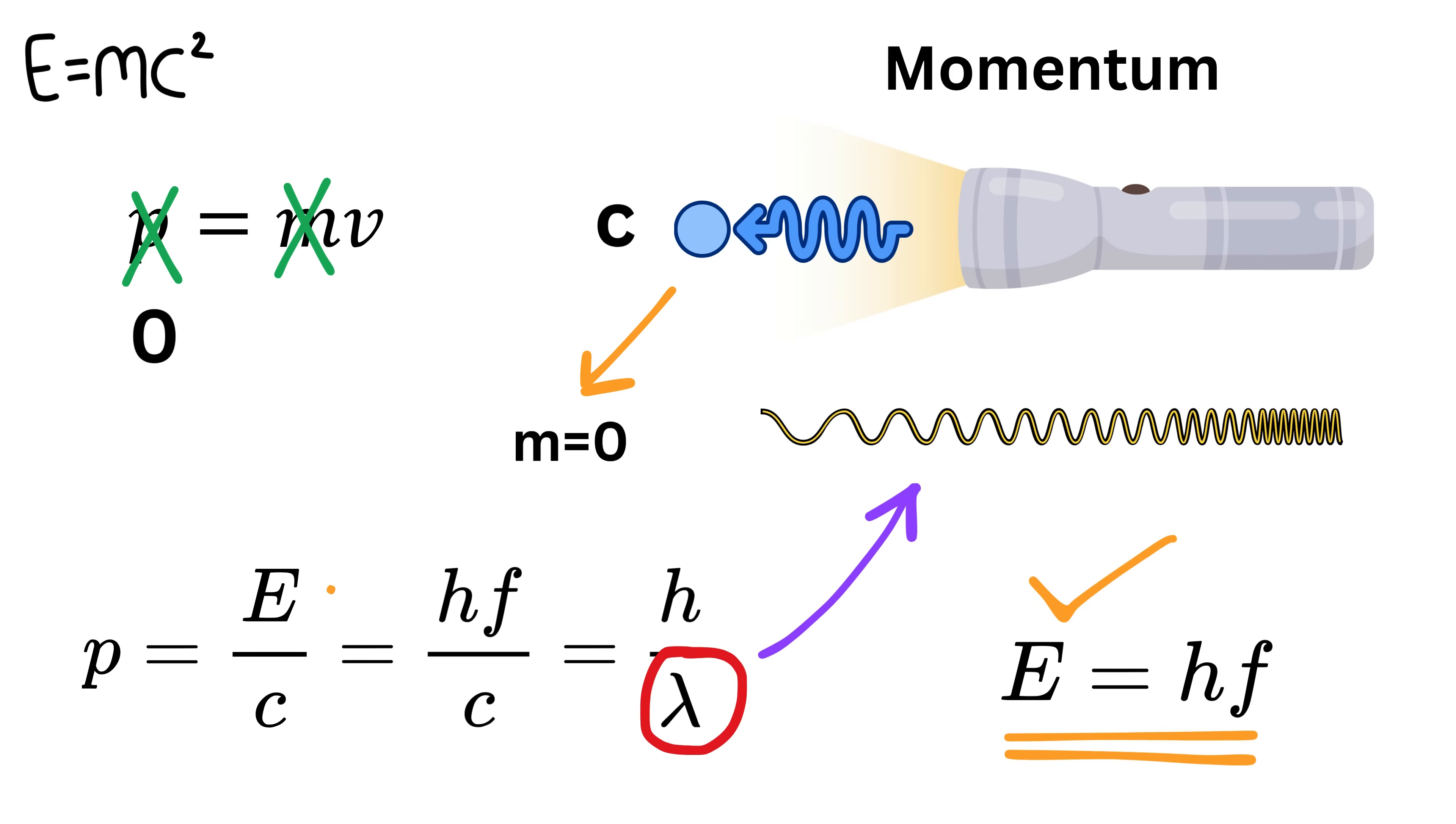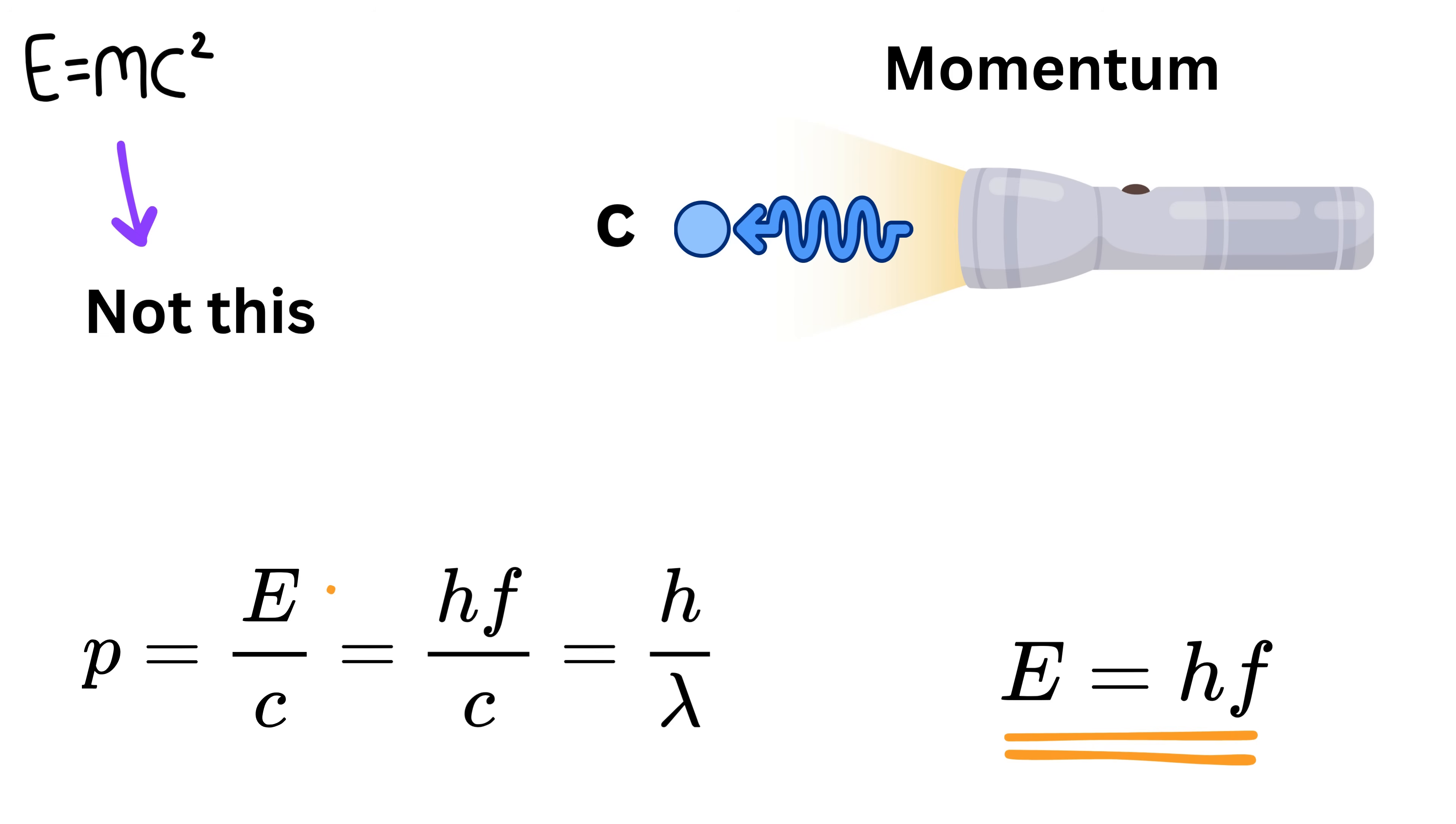So to sum it up, photons may have no mass, but they still carry energy and momentum. Their energy comes from frequency, and their momentum comes from that energy and the fact that they move at the speed of light.